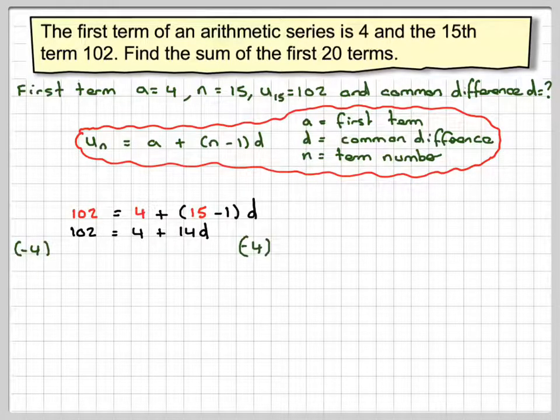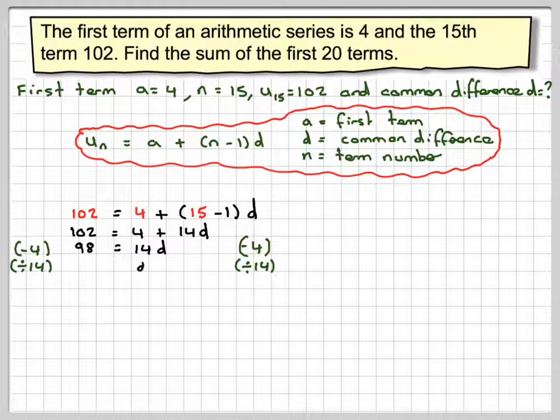Taking 4 from both sides, we get 98 equals 14D. Dividing by 14, we get D equals 7.